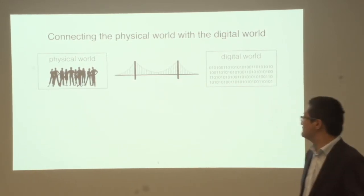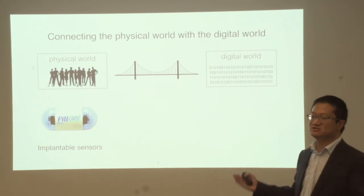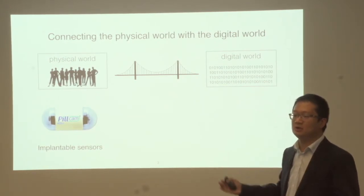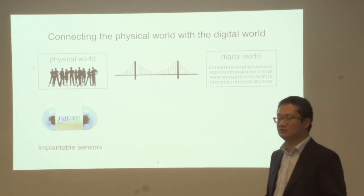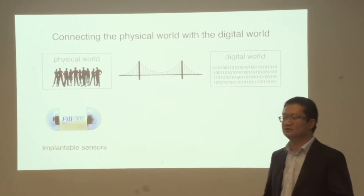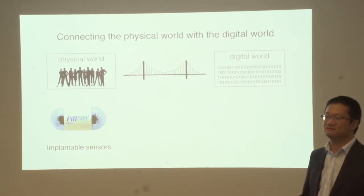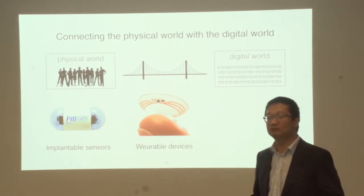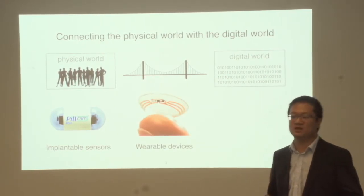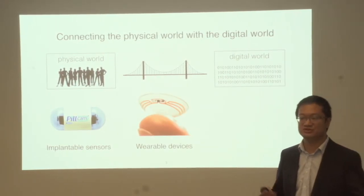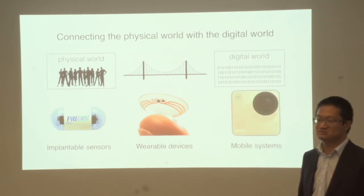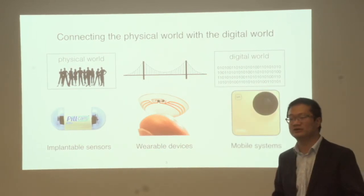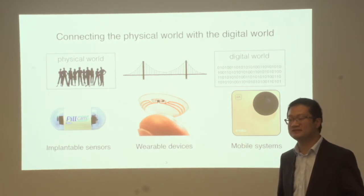Examples of these devices include implantable devices such as a capsule cam which monitors how your digestive system works, and wearable systems such as smart contact lenses which measure glucose levels in tears, and mobile systems such as lifelogging cameras which record what you see every day.